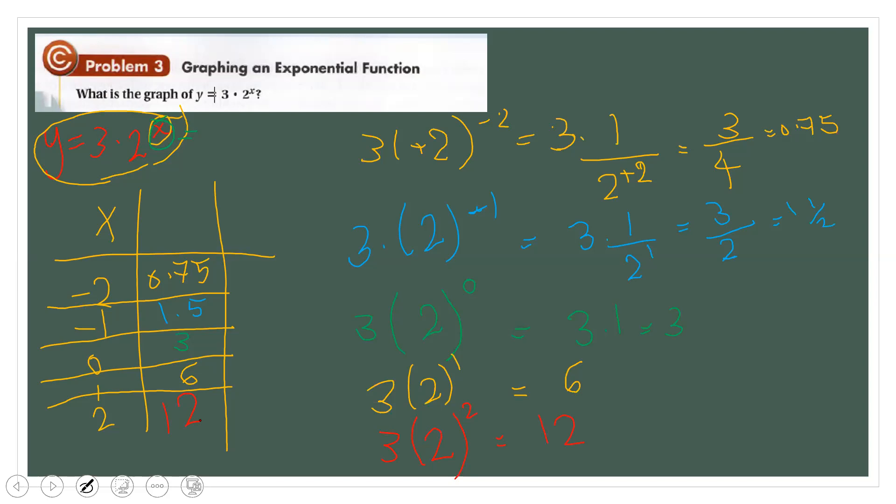So the values of x and y from the exponential function y = 3 times 2 raised to x are now complete.